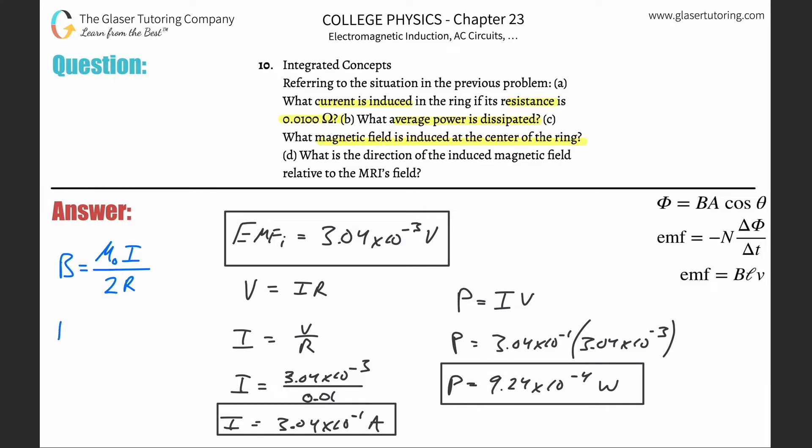Now what we're going to do is basically just plug in the values. The permeability of free space is 4π times 10 to the minus 7th. The current here is what we just found, 3.04 times 10 to the minus 1st. All divided by 2 times the radius. The radius of this loop from the prior problem was 1.1 centimeters, so it's going to be 1.1 times 10 to the minus 2 meters.